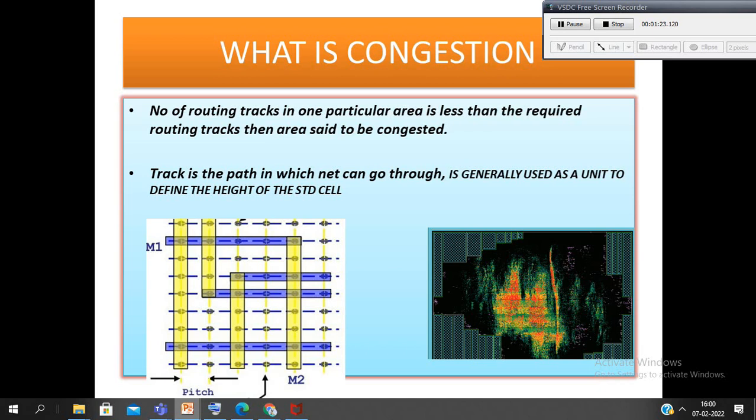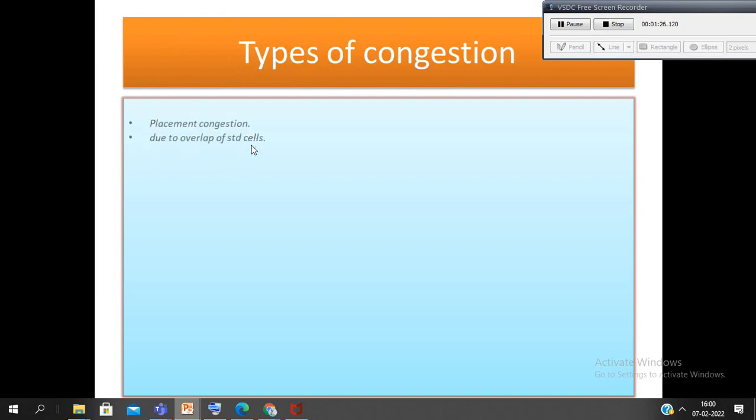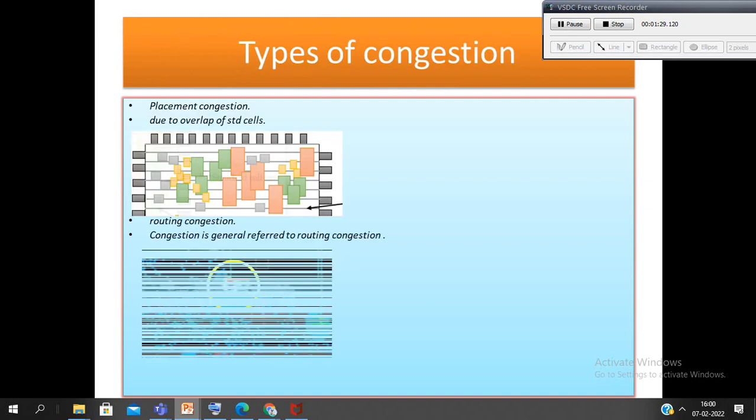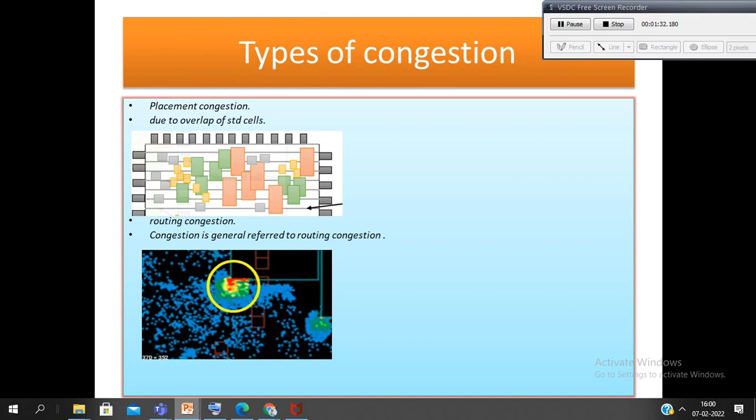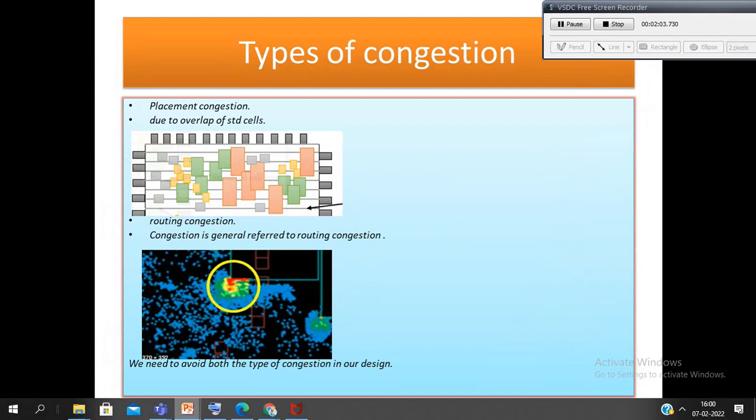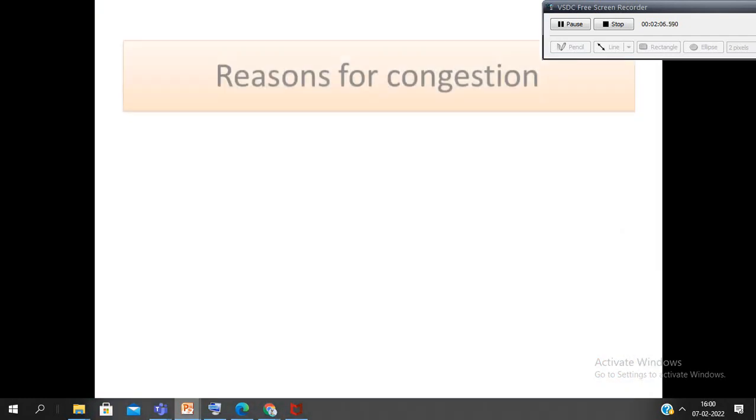So there are two types of congestions in physical design. One is placement congestion, one is routing congestion. Routing congestion we know as congestion. Placement congestion is due to the overlap of standard cells. Sometimes it may happen that there is less area at the placement stage to place the cells, so that time this overlapping of cells occurs. And routing congestion we are going to discuss in detail in our upcoming slides, so keep on staying here.